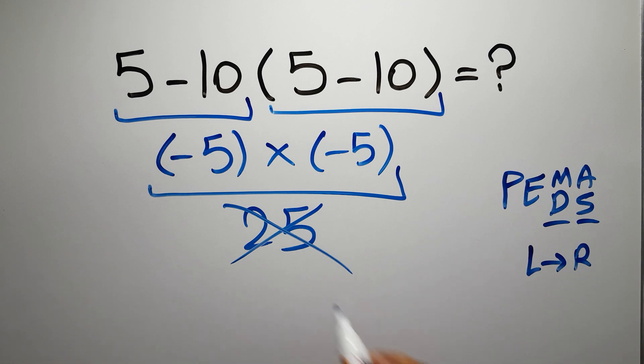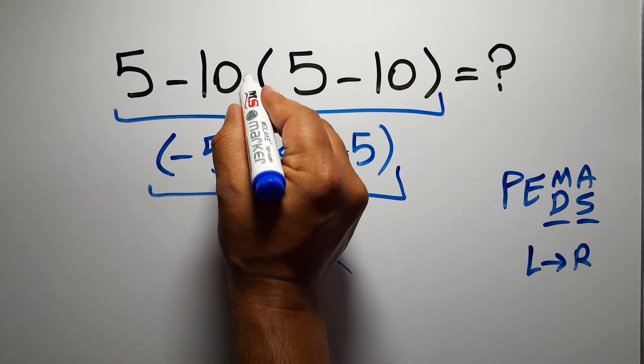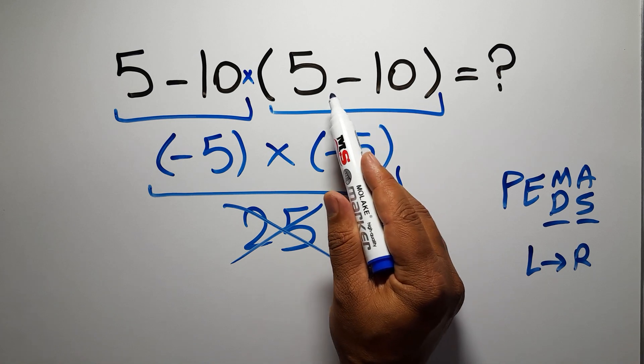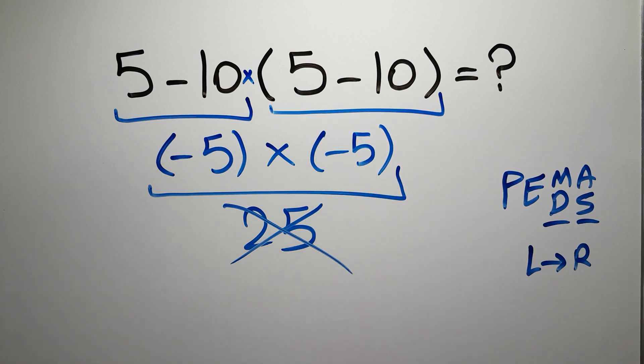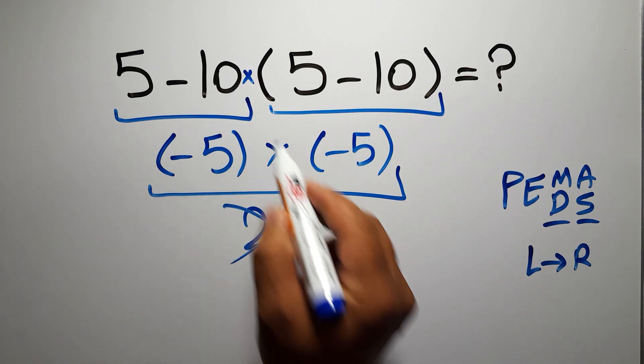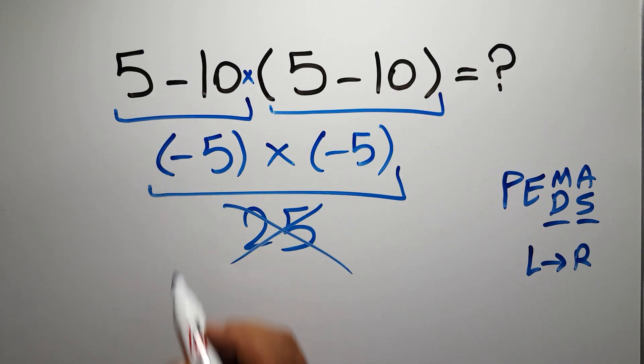In this expression we have one subtraction, one multiplication, and one parentheses. Inside these parentheses we have one subtraction. According to the PEMDAS, first we have to do parentheses, then this multiplication, and finally this subtraction.